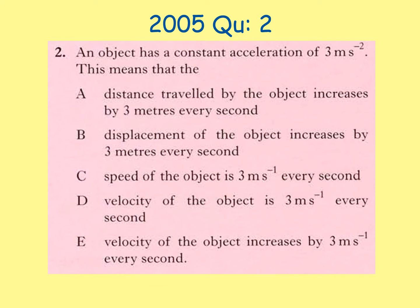2005 Question 2. An object has a constant acceleration of 3 metres per second squared. The question is asking what this means. We know that acceleration is a change in velocity per unit time, so let's look for an answer that includes velocity. Both D and E mention velocity. We want to look for an answer that mentions the change in velocity — only E mentions this change, as it states the velocity increases. So E is the correct answer: the velocity of the object increases by 3 metres per second every second.